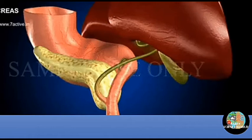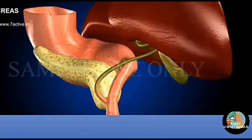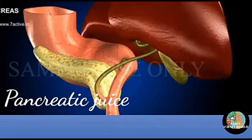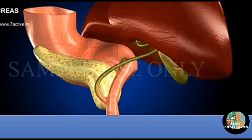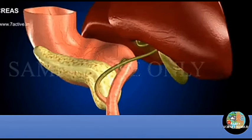The pancreas is a large, cream-colored gland located just below the stomach. The pancreas secretes pancreatic juice, which helps in the digestion of carbohydrates, proteins, and fats. Then the food goes to the large intestine.